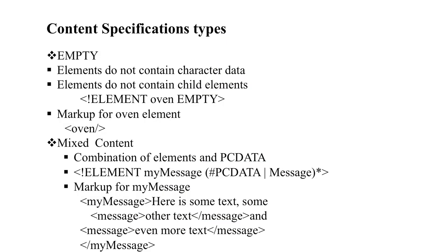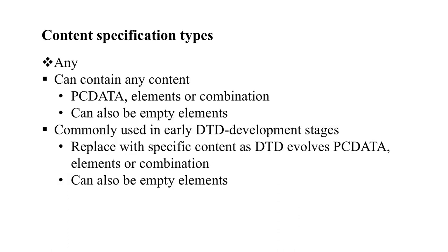Content specification types include empty, meaning there is no child element and the markup is for its own element. Mixed content is a combination of element and PCDATA — for example, a message element that contains some text mixed with sub-elements and more text. This can be any PCDATA, or elements, or a combination. This was commonly used in earlier DTD versions but has now been replaced with PCDATA and combinations. It can also contain empty.